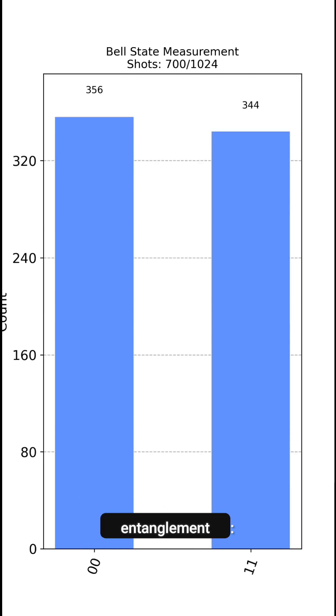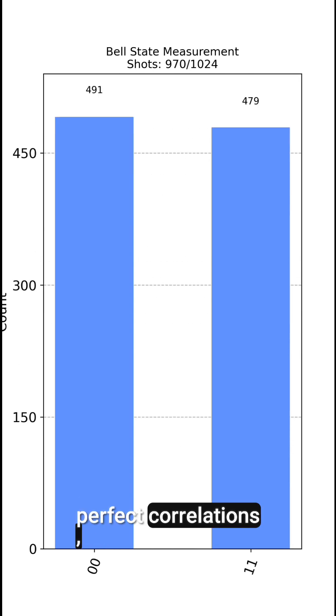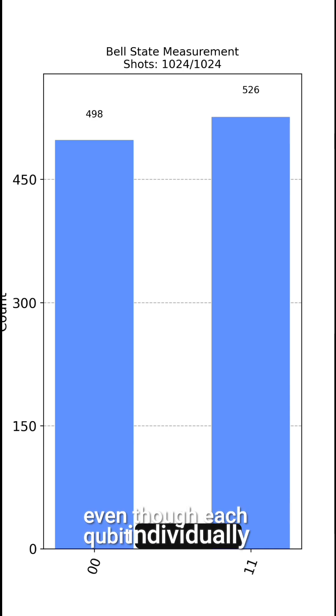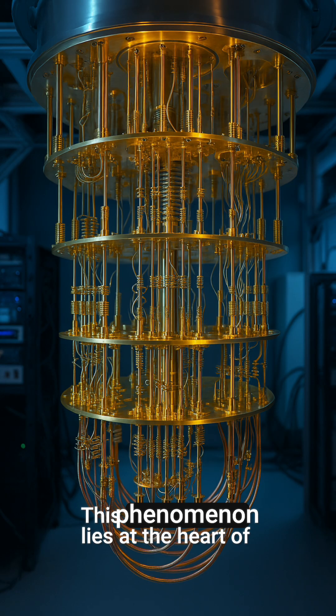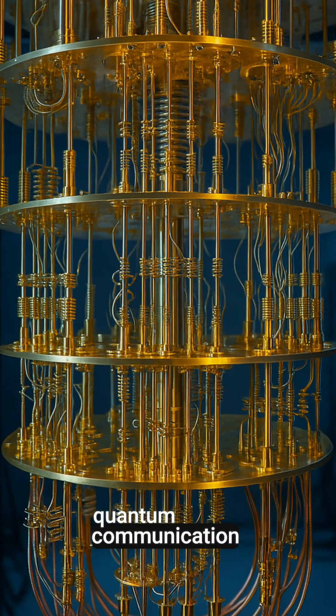This is a hallmark of quantum entanglement, perfect correlations, even though each qubit individually seems random. This phenomenon lies at the heart of quantum communication and computation.